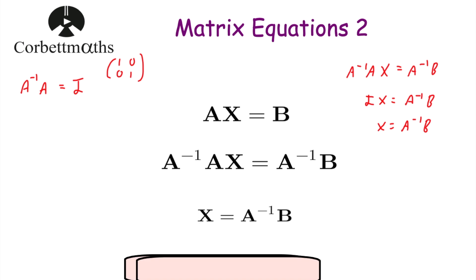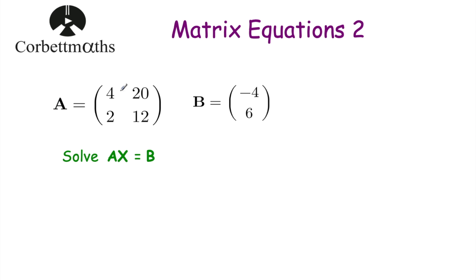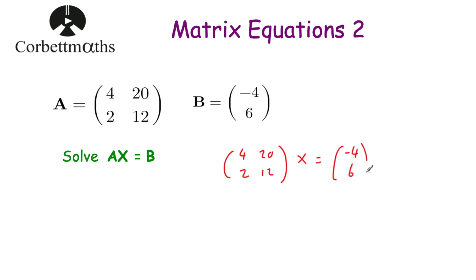Let's have a look at an example. We've got matrix A which is 4, 20, 2, 12, and matrix B which is negative 4, 6. We want to solve the equation AX equals B. So we write: the matrix 4, 20, 2, 12 times X equals negative 4, 6. To solve this, we can't divide both sides by the matrix, but we can multiply both sides by the inverse of A to get rid of A in front of X.